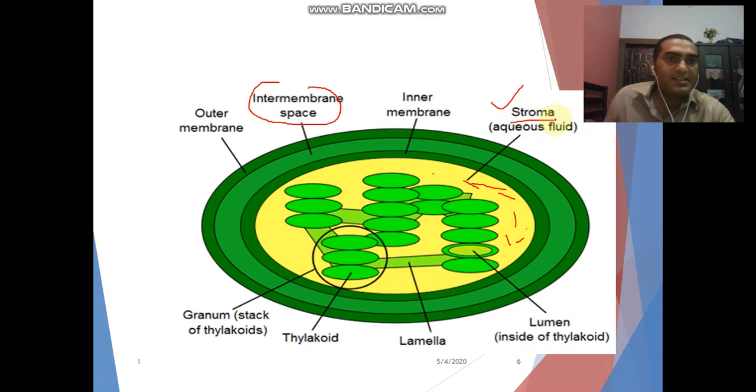So stroma is responsible for the dark reaction. Dark reaction always occur in the stroma. And this whole structure is known as a granum and single structure is known as a thylakoid. As you can see here, thylakoid, this one is thylakoid, while this whole structure is known as a granum and these are the laminal attachments.